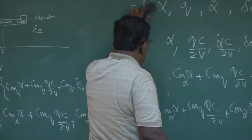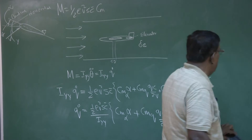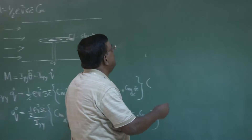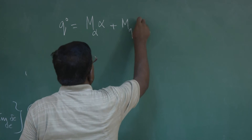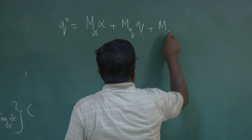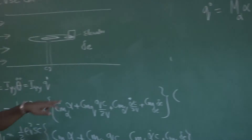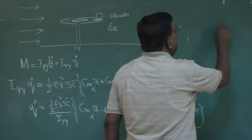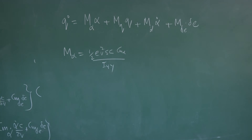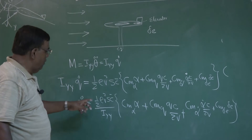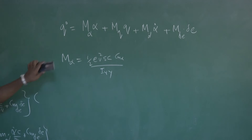Writing in a neater form, q_dot = M_alpha * alpha + M_q * alpha_dot + M_alpha_dot * alpha_dot + M_delta_e * delta_e, where M_alpha = (1/2)*rho*V^2*S*c_bar*Cm_alpha / I_yy, and M_q comes from the Cm_q*(c/2v) term divided by I_yy — simple manipulation. The whole of each term multiplied by the respective stability derivative gives the shorthand M notation.